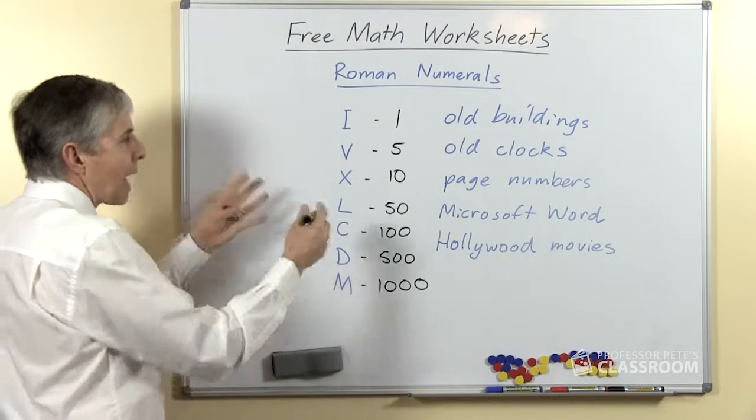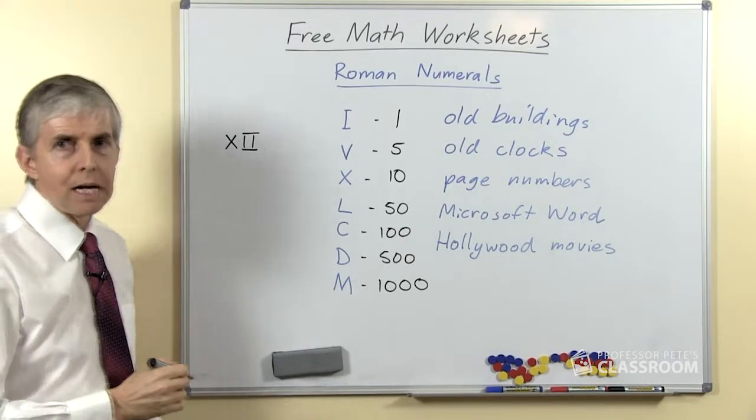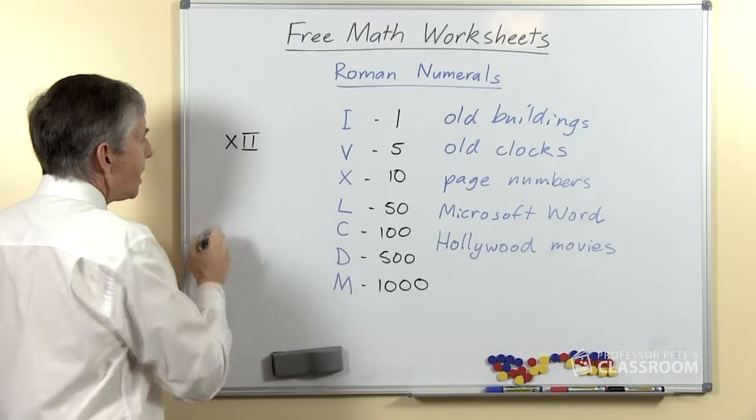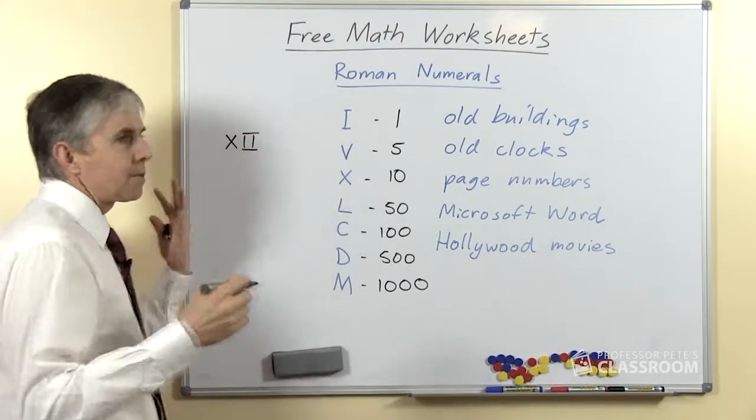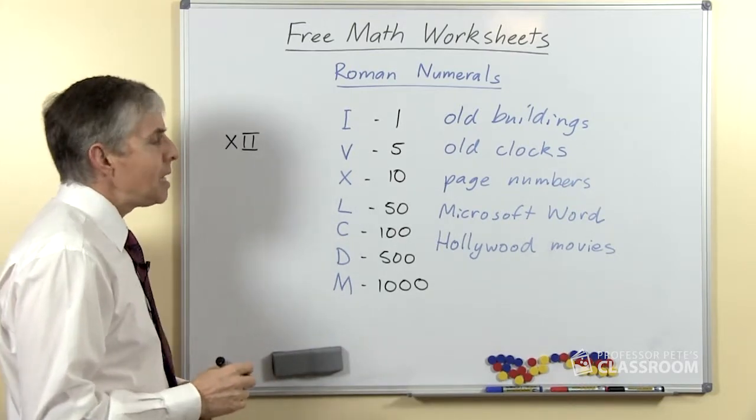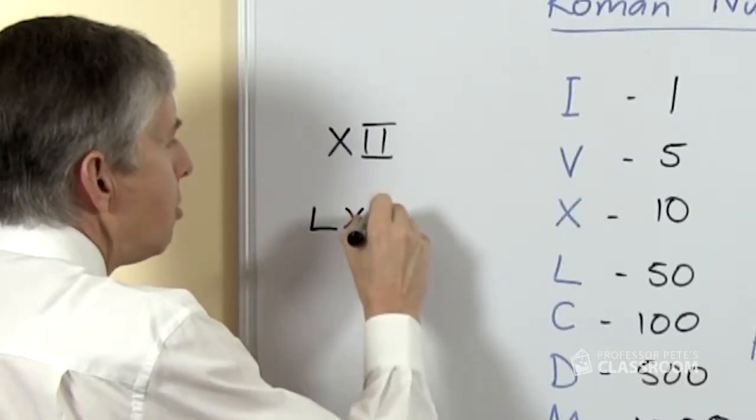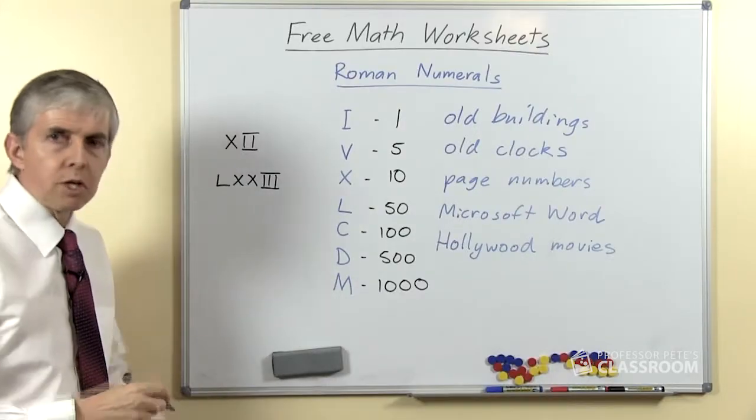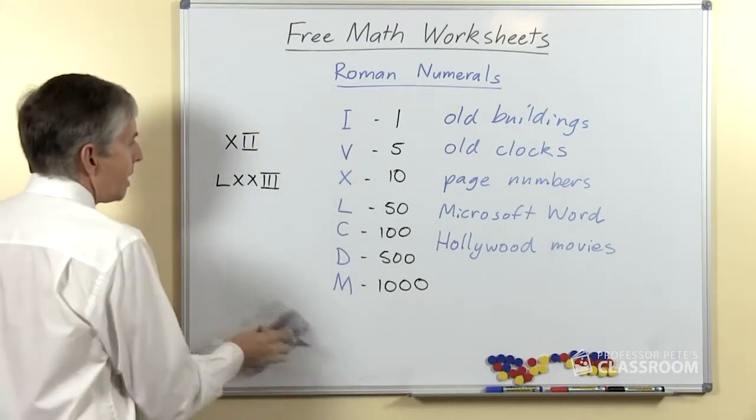We can make up numbers by adding them together. If you are 12 years old, you could make that value by putting an X and two I's—10 and 2 more. If you have a relative who is, say, 73, how would you write that? Well, you'd write L for 50, two X's for two 10's, and then three I's. So you can make up values like that by just joining them together and adding them next to each other.